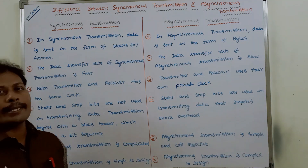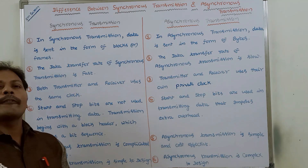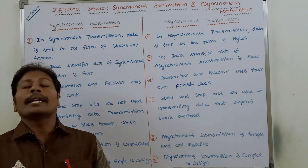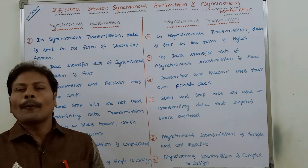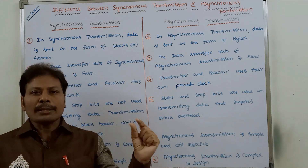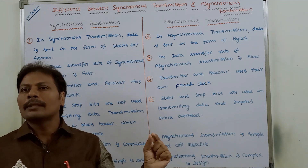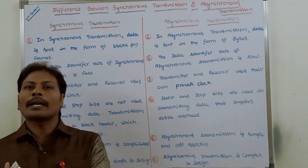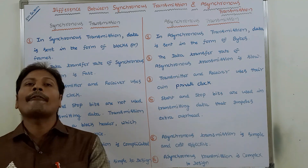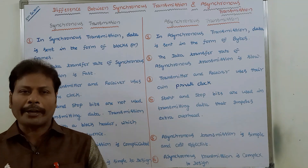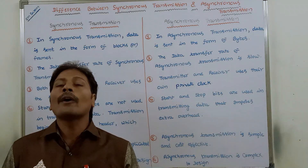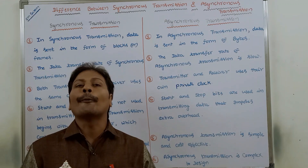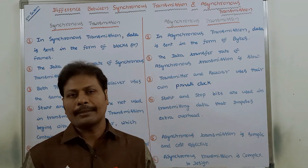The first point: in the case of synchronous transmission, the data is transferred in the form of blocks or frames. Suppose there is a transmitter and receiver — the data is sent from transmitter to receiver in blocks or frames. Whereas, in the case of asynchronous transmission, data is transferred in the form of bytes or characters.